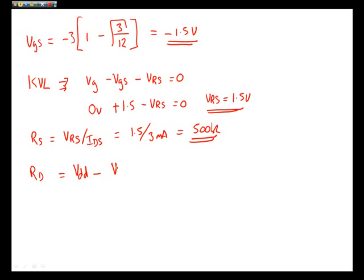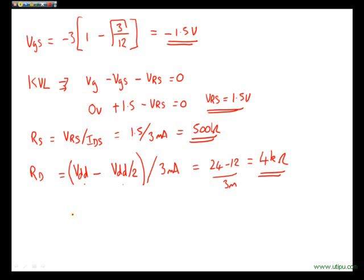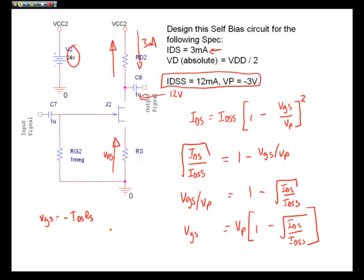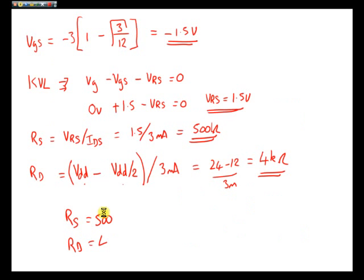The drain resistance is equal to VDD, the supply, minus VDD upon 2, because that was specification, and we need to know the current flowing. Very simple, 3 milliamps. Here we have 24 minus 12 divided by 3. 24 volts minus 12 volts over 3 milliamps and that equals 4 kilo ohms. We've actually completed our bias and we now know two main key factors. We know that our RS is equal to 500 and we know that our RD is equal to 4,000.